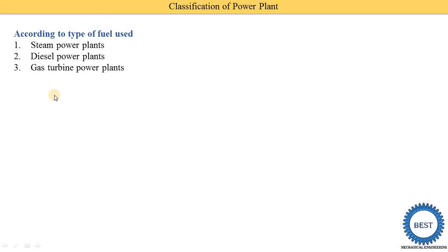The third type is the gas turbine power plant, where gas is used. The gas produces heat energy, which is supplied to a turbine. In the turbine, mechanical energy is produced, which is supplied to a generator to produce electricity. The fourth type is the nuclear power plant, where nuclear fuel produces heat energy.